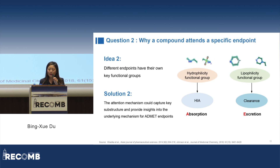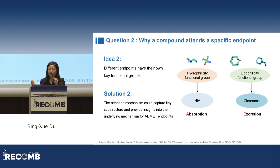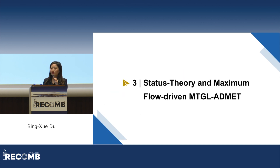Secondly, why does a compound affect a specific endpoint? We believe that different endpoints have their own key functional groups. For instance, the endpoint HIA is usually related to the hydrophilicity functional group, and the excretion endpoint clearance is related to the lipophilicity functional group. Our solution is the attention mechanism, which could capture key substructures and provide insights into the underlying mechanism for the ADMET endpoint. Based on these observations, we proposed our method: status theory and maximum flow-driven MTGL-ADMET.